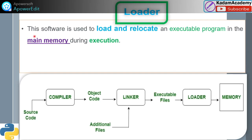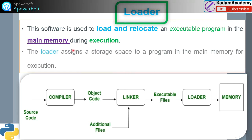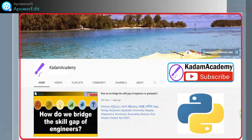Lastly, the loader is software used to load and relocate the executable program into main memory during execution. The source code, after going through the compiler, is converted into object code (machine language). The linker then merges additional library files and converts it into an executable (.exe) file. The loader stores and assigns storage space to the program in main memory for execution.